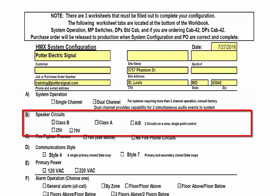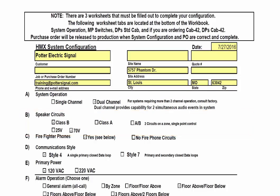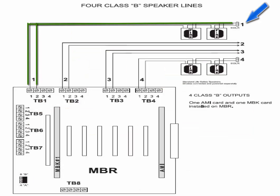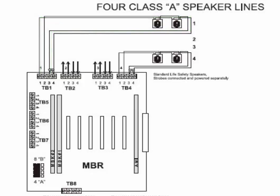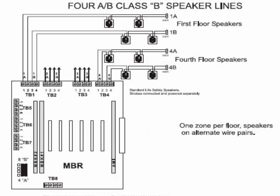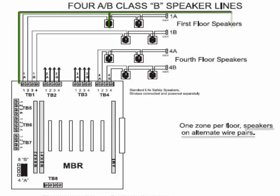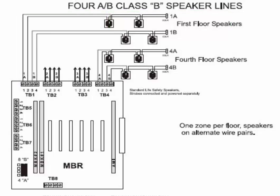In this section, the wiring style and voltage for the speaker circuits is defined. Class B speaker circuits consist of two wires with an end-of-line resistor which is installed at the last speaker. Class A speaker circuits require the circuit to return back to the distributed panel after the last speaker. Class AB speaker schemes are only selected when there is a requirement for every other speaker that is installed to be on a different circuit.